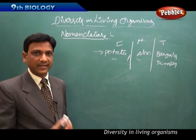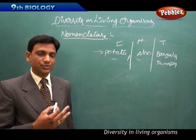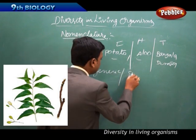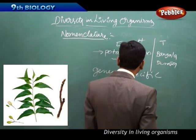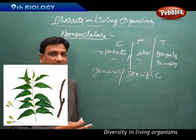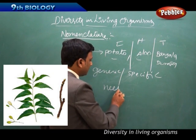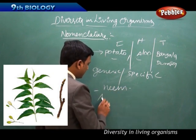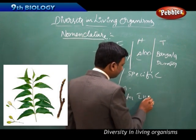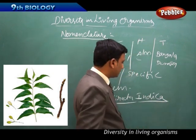Scientific names are given according to the system established by Carolus Linnaeus. Each name has two parts: a generic name (genus) and a specific name (species). For example, the Indian neem tree has the scientific name Azadirachta indica — 'Azadirachta' is the genus name and 'indica' is the species name.